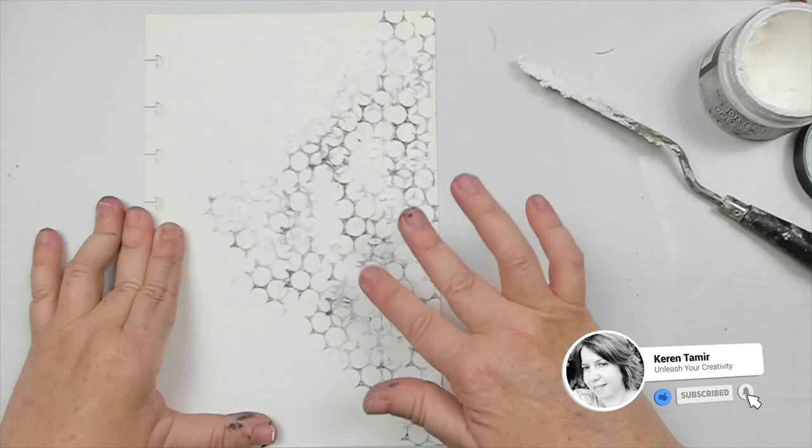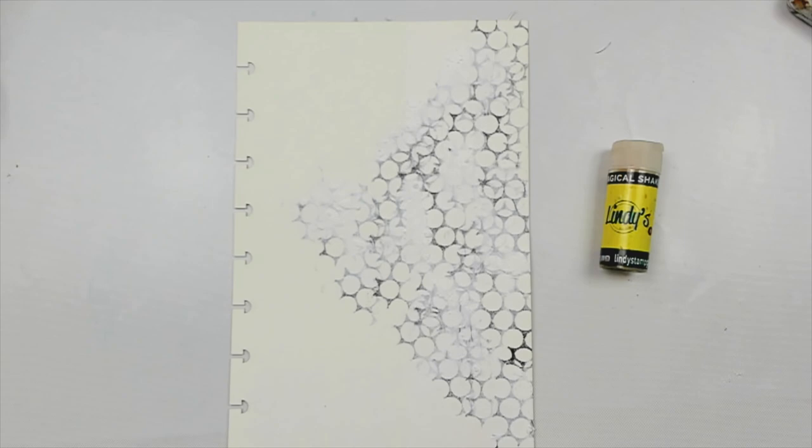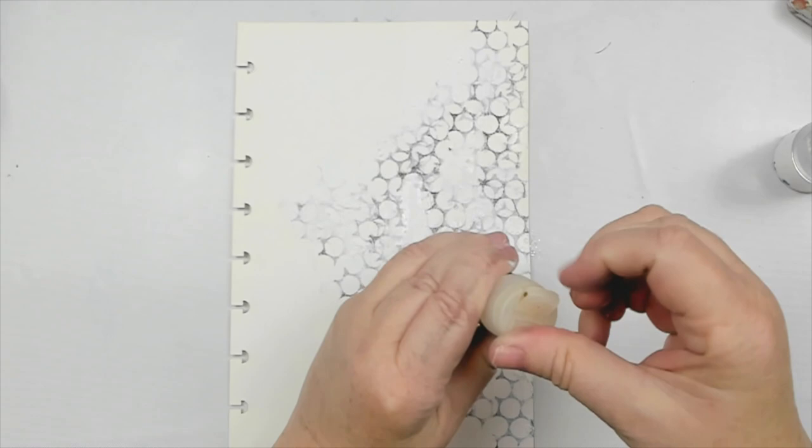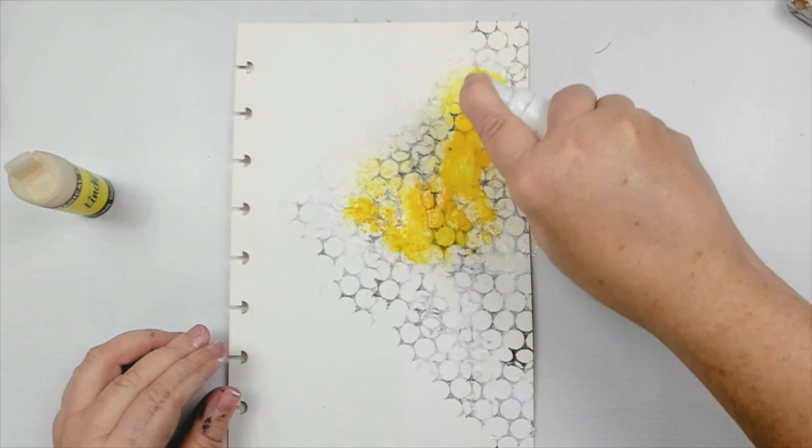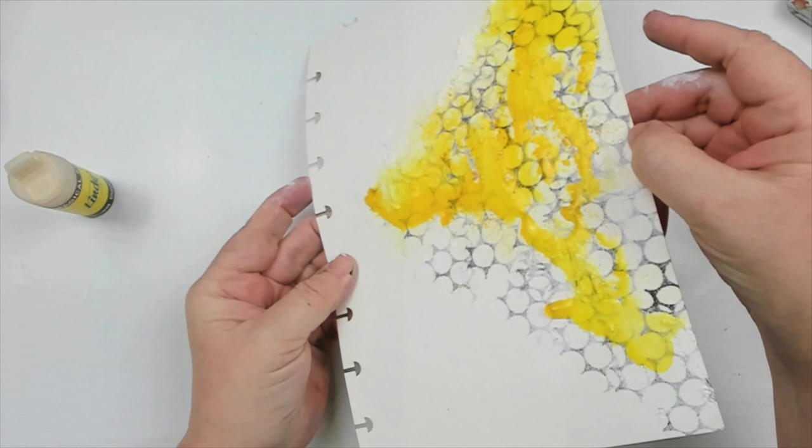To add some color, I decided to use some Lindy's shakers. I started with the yellow and only added it in the main area where the design was. That's done on purpose to make sure that everything stays in the area where it's supposed to, because I want to leave some white space where there is no texture.